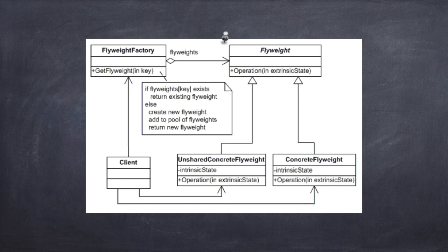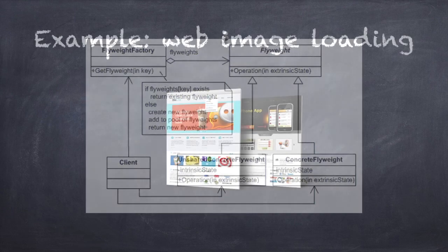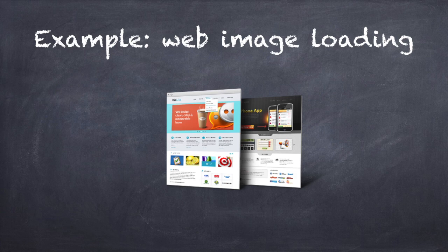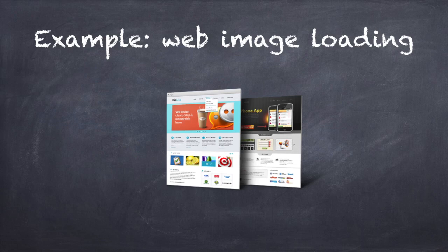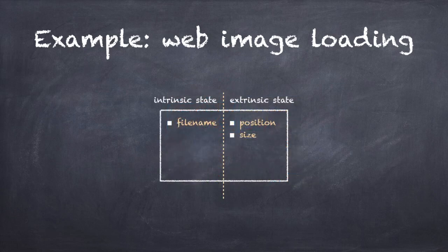I am going to use the flyweight pattern to implement image loading code for a web browser. A typical web page contains a lot of images, but sometimes the same image appears in multiple places. It would be wasteful to reload the same image every time, so I am going to use flyweight objects to load each image only once. The first thing I need to do is examine the state of the image. The image file name is intrinsic. The image position is extrinsic, and the image size is also extrinsic. The client is going to specify all of the extrinsic state, so I only need to store the intrinsic state.